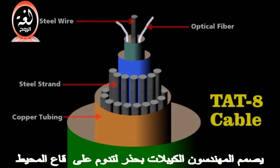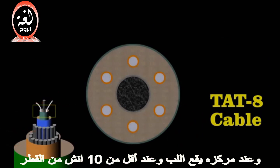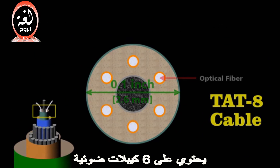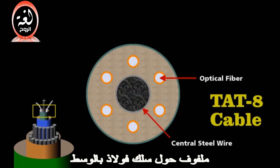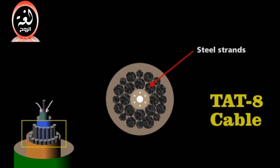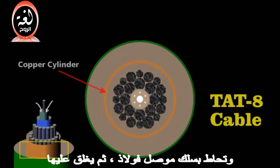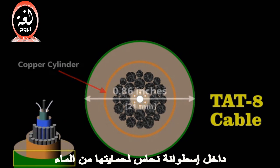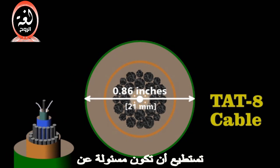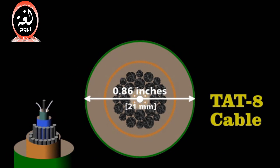Engineers designed the cable carefully to survive on the ocean floor. At its center lies the core — less than a tenth of an inch in diameter — containing six optical fibers wrapped around a central steel wire. They embedded this in an elastomer to cushion the fibers, surrounded it with steel strands, and sealed it inside a copper cylinder to protect it from water. The final cable was less than an inch in diameter, yet it could handle some 40,000 simultaneous phone calls.